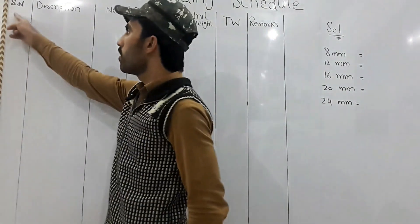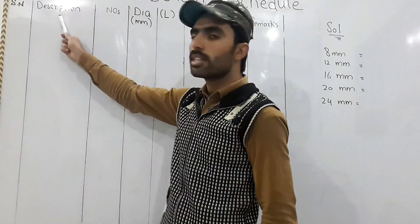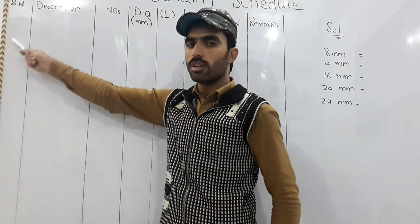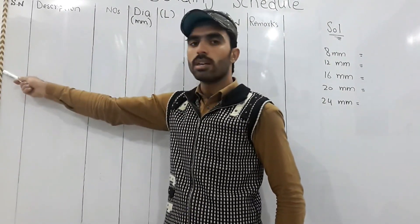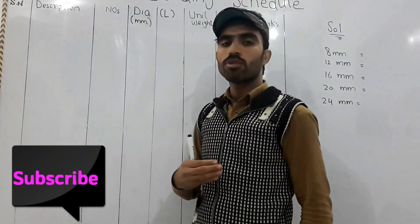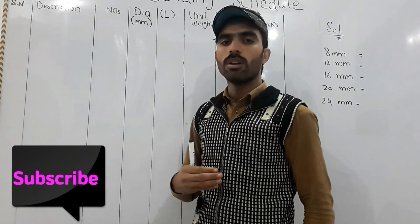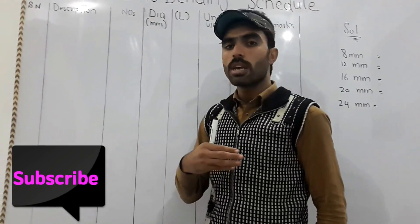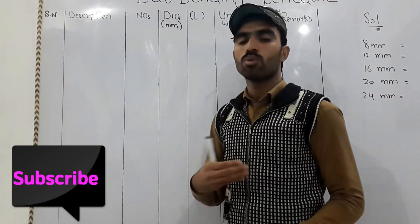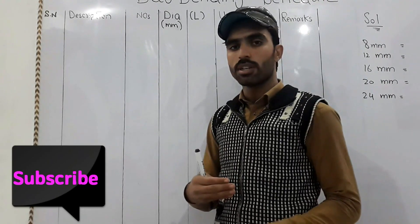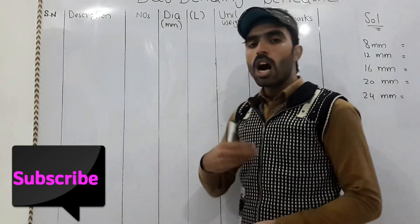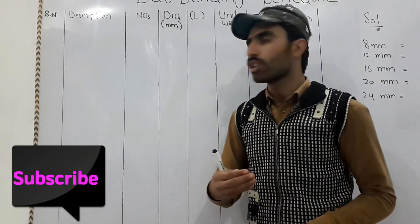The table has a serial number column — that means the first number, second number, third number, and so on. Another column is description, where you can write the names of elements, for example beam or slab — whatever you want to make or calculate the steel quantity for.